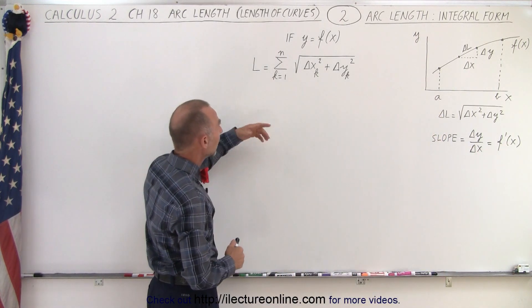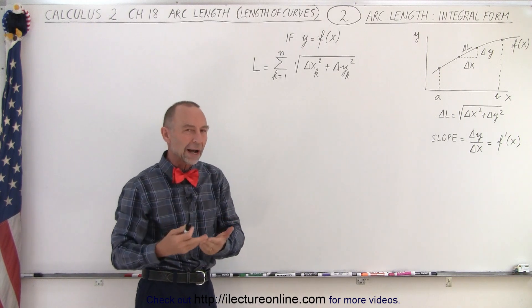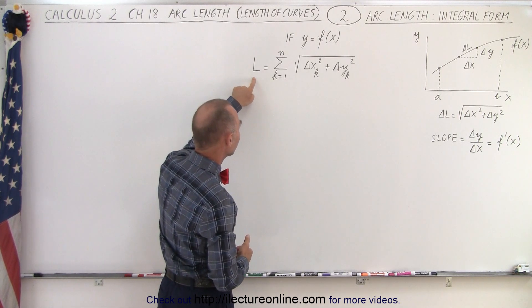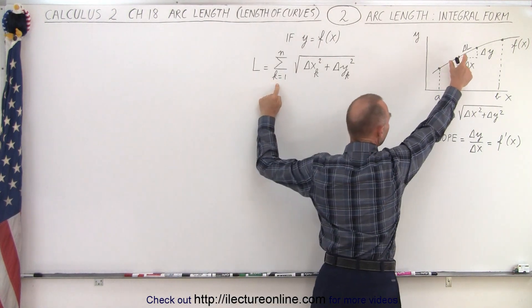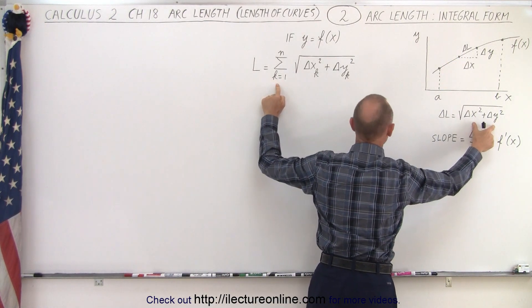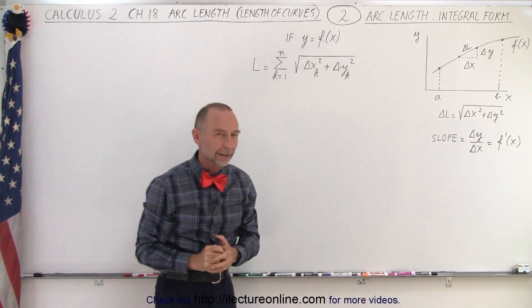So we come back over here and we're going to use the format that y is a function of x. And then we can say that the length of the curve is equal to the sum of all the small little delta L's and of course the delta L is equal to this so we substitute that for delta L.